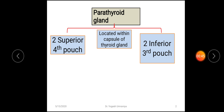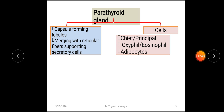Now we will see the basic structure of the parathyroid gland. Same as the thyroid gland, the parathyroid gland is also covered with a capsule on the peripheral aspect. From this capsule there is formation of various connective tissue septa that extend towards the central substance of the gland, converting the glandular substance into various lobules. This connective tissue septa also merges with the reticular fibers which support the secretory cells of the parathyroid gland.